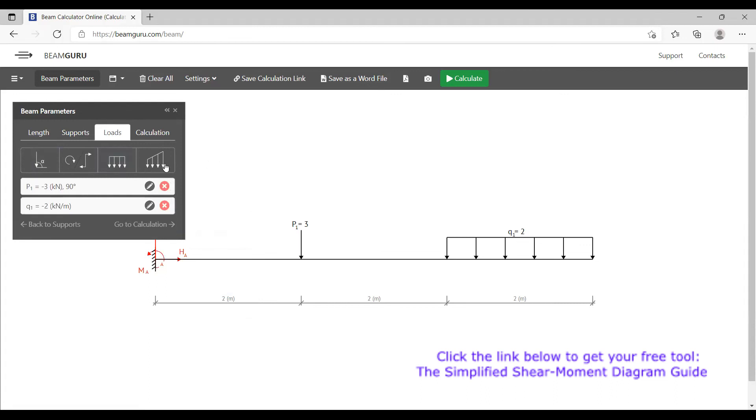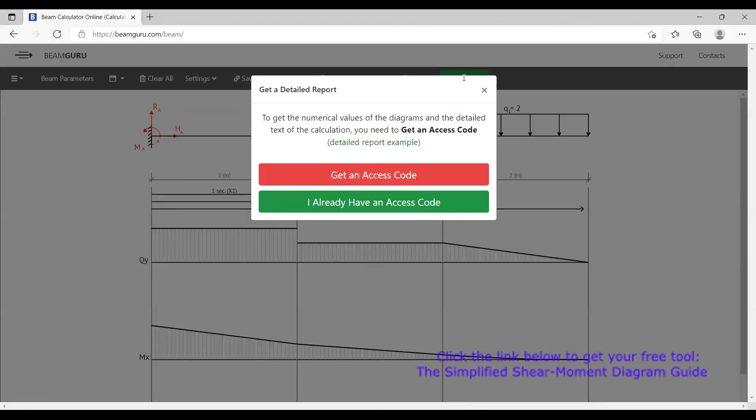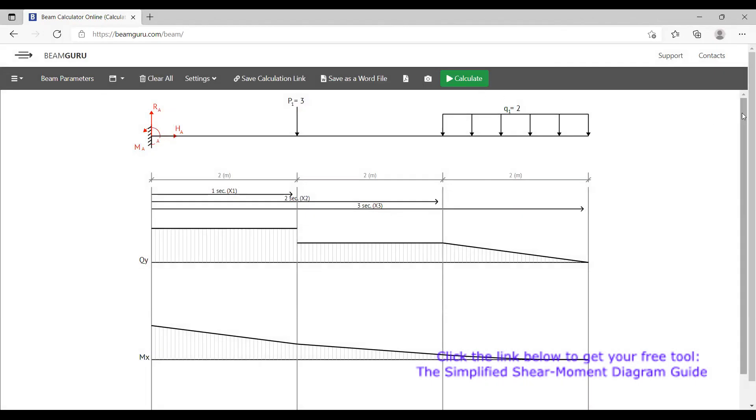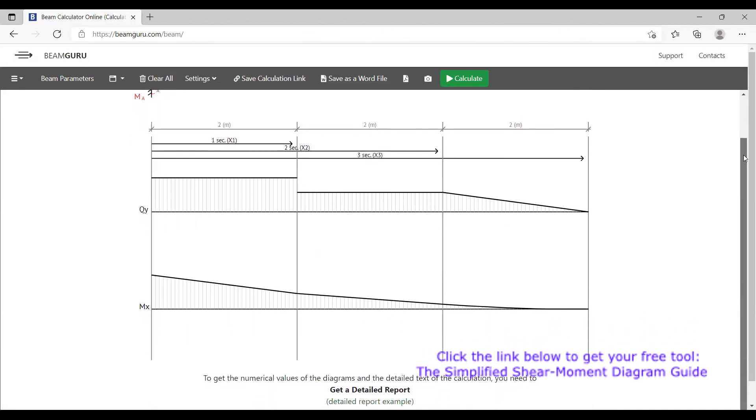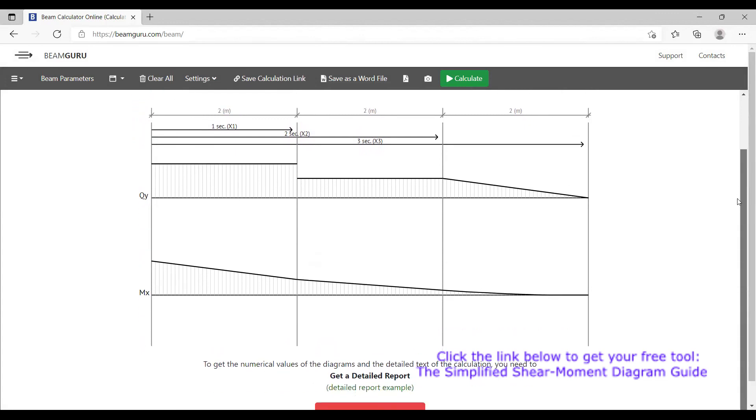This is how our beam looks like. Now we will just go ahead and hit calculate. Here is our diagram. This is one way of checking your work. If you're not sure you drew your diagram correctly, this is a very good way to verify and make sure you understand this type of problem very well.